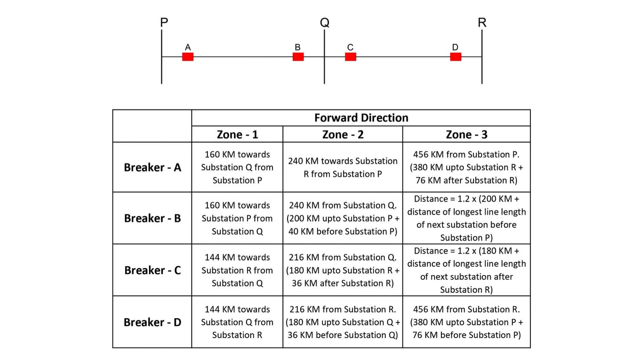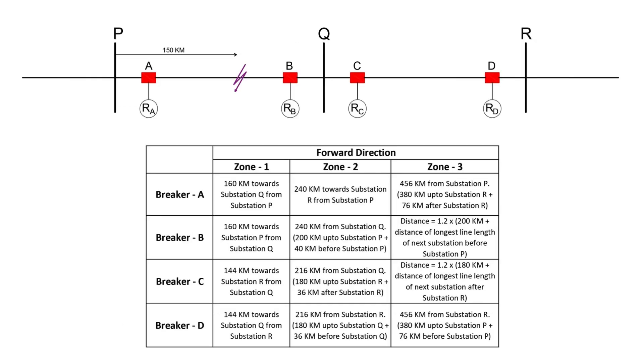Consider a fault at 150 kilometers from substation P along the PQ line. Both relay A at substation P and relay B at substation Q will detect this fault within their zone 1 range. Since this is a zone 1 fault, both relays will send instantaneous trip commands to their respective breakers.